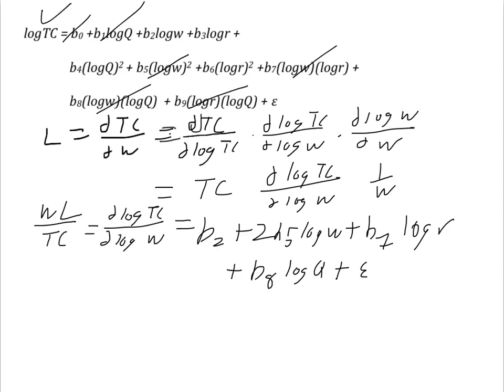Why did I do all this? Well, the general translog cost function is hard to estimate, because it has so many terms that are functions of the same underlying variables. It suffers from what econometricians call multicollinearity, a condition that makes it hard to estimate the individual coefficients with precision. We can get more precise estimates by estimating simultaneously the input share equations, which our duality theory allows us to derive from the total cost function.